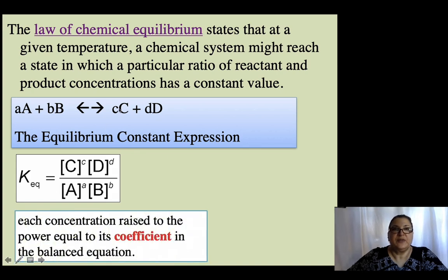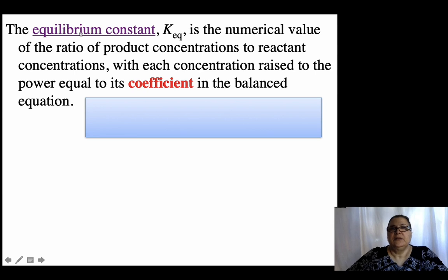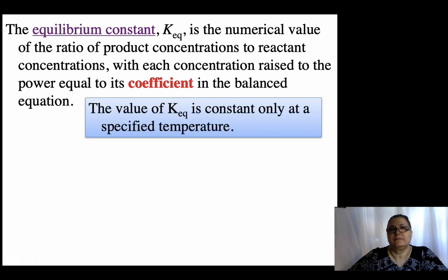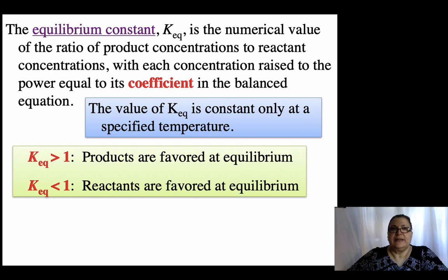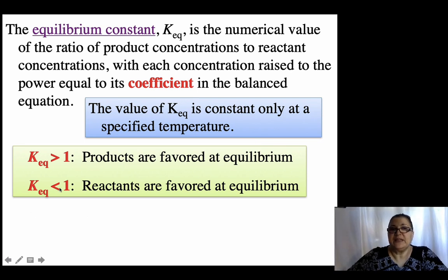The coefficient from a balanced reaction is the number in front of the formula. The equilibrium constant is the numerical value that describes the ratio of product concentrations to reactant concentrations, each raised to the power corresponding to its coefficient in the balanced equation. If K-equilibrium is greater than 1, then the product is favored.